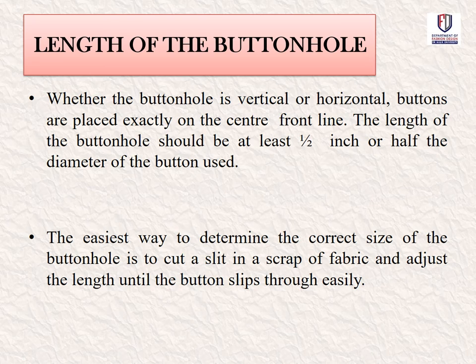Regarding the length of the buttonhole: whether the buttonhole is vertical or horizontal, buttons are placed exactly on the center front line. The length of the buttonhole should be at least half an inch or half the diameter of the button. The easiest way to determine the correct size is to cut a slit in a scrap of fabric and adjust the length until the button slips through easily.